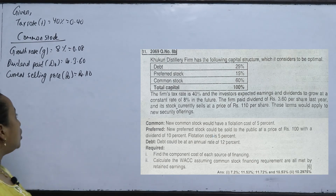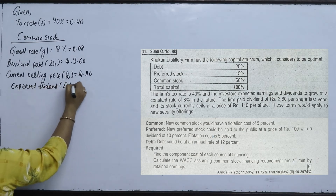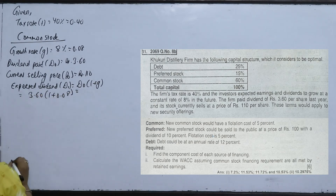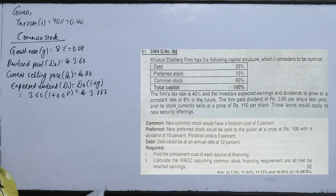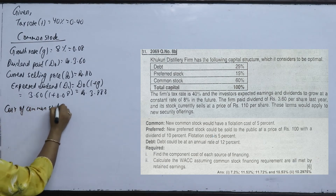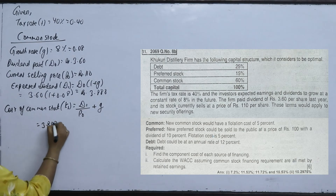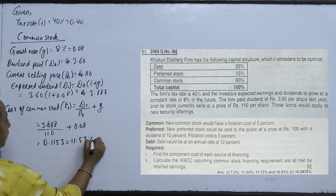We calculate the expected dividend D1 using the formula D1 = D0 × (1 + G). D0 is 3.60 and G is 0.08, so D1 = Rs. 3.888. The cost of internal equity KS = D1 / P0 + G = 3.888 / 110 + 0.08 = 0.1153, which is 11.53%.